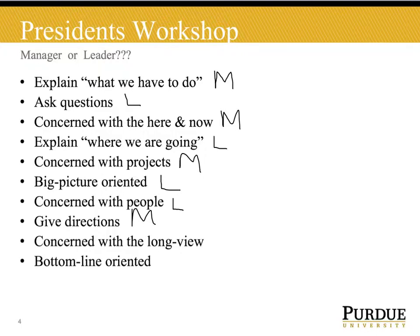Concerned with the long view — a leader is concerned with the long view, which is similar to being big picture oriented. Finally, managers are bottom line oriented. They know that the task needs to be done, and sometimes they can go too far in getting the task done because they are bottom line oriented.